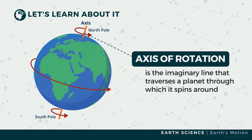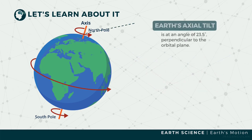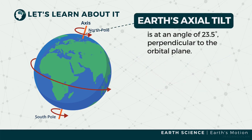One interesting thing about Earth's rotation is that its axis of rotation is not straight up. In fact, it is tilted. Specifically, Earth's axis is tilted at an angle of 23.5 degrees from the perpendicular of its orbital plane.